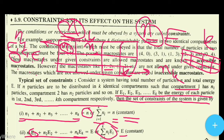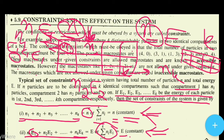For example, n1 particles are in compartment 1, each with energy e1, so their contribution is n1·e1. Similarly for compartment 2: n2·e2. When we sum all these energies, we get the total energy E. This is the constraint that the system must follow — the conditions or restrictions the system must obey are called constraints. When a macrostate does not obey these constraints, it becomes an inaccessible macrostate.